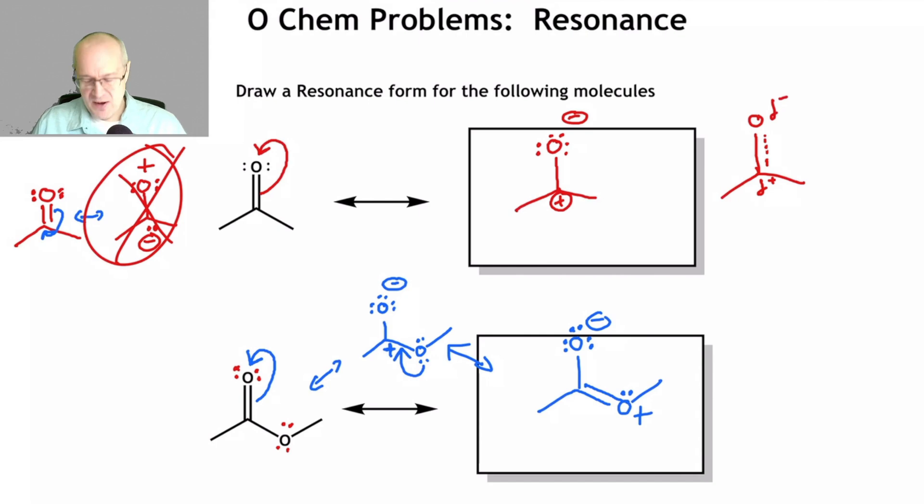So, in terms of major and minor, this is major, and that would be considered major. This one is the most major because it has the least amount of charge separation. And this is a very minor contributor. So, when I'm drawing the overall hybrid structure, I would draw something like this. Delta negative, delta positive. That's how I would draw the hybrid form for that particular molecule.